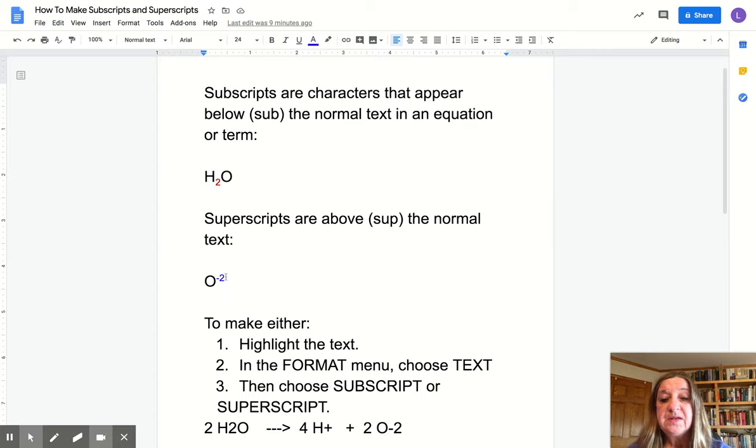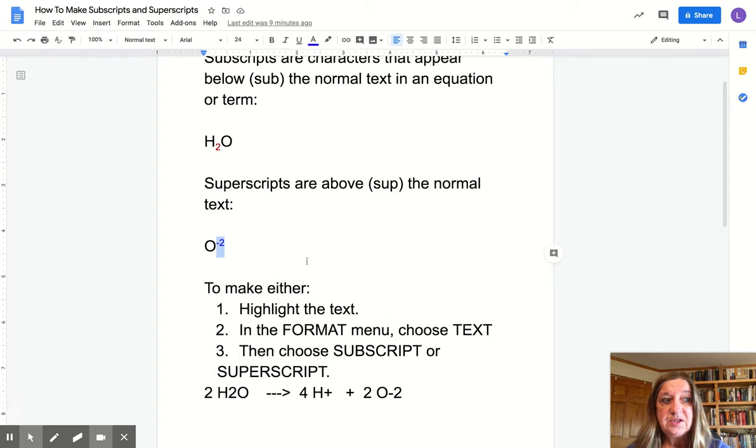A superscript is the 2, the negative 2, near the top of the oxygen, and its purpose is to show you the charge on the oxygen atom. It's also used in math to show an exponent.